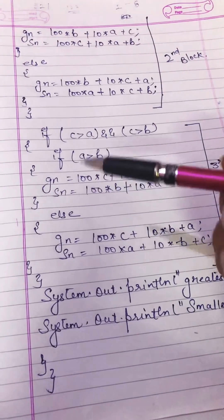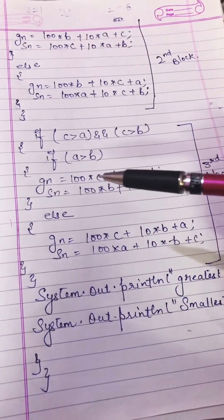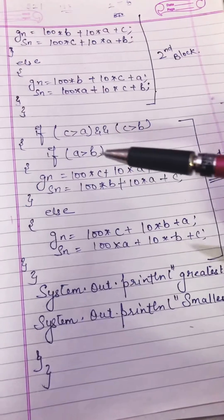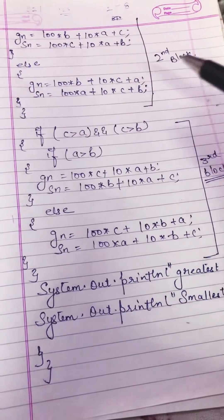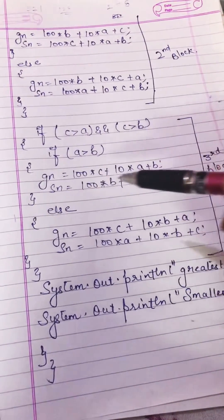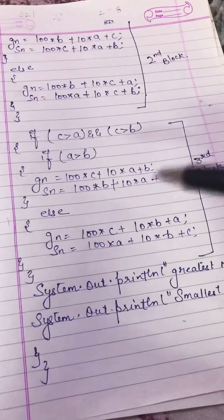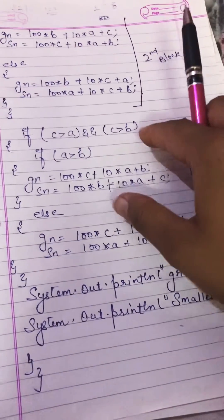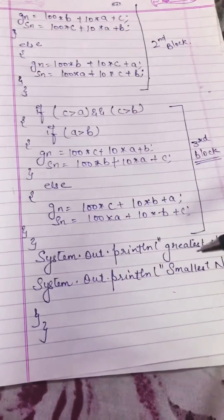The process is the same for all three blocks. For the third block, we check if C is greater than A and C is greater than B — so C is on the hundreds place, A on the tens place, and B on the units place for the greatest number. Then B, A, C gives the smallest number. If the if block is true, the else block is skipped; if false, the else block executes and gives the result for the greatest and smallest number.